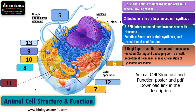Golgi apparatus is also a site of post-translational modification. For example, if a protein is to be directed to the lysosome, then that protein is tagged with mannose-6-phosphate. Any protein tagged with mannose-6-phosphate inside the Golgi will be directed towards the lysosome. So this type of addressing is done at the Golgi apparatus — that's why it is called the sorting center of the cell.